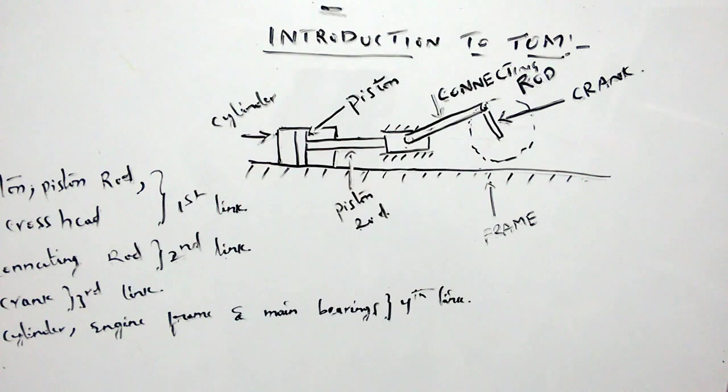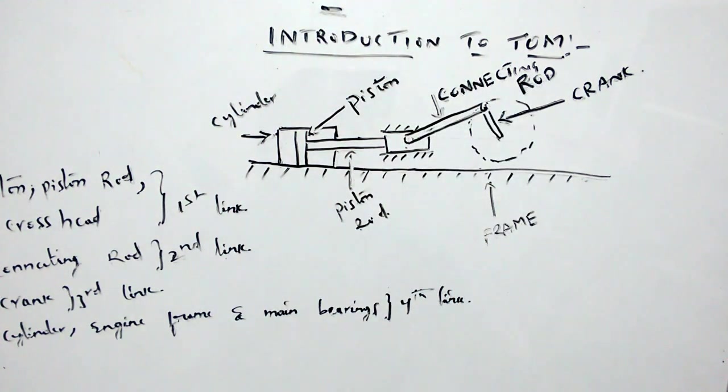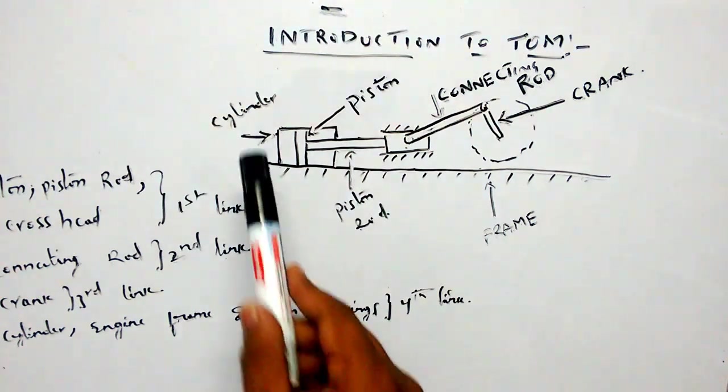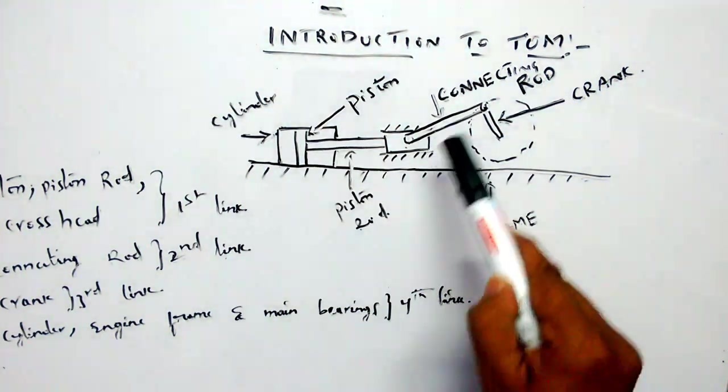The velocity is the same, and the connecting rod is a second link. Crank is a third link. These elements move relative to some other parts. But if you observe, the cylinder, engine frame, and main bearings are in a stationary position. We can call it a fourth link. Therefore, a reciprocating steam engine consists of four links.